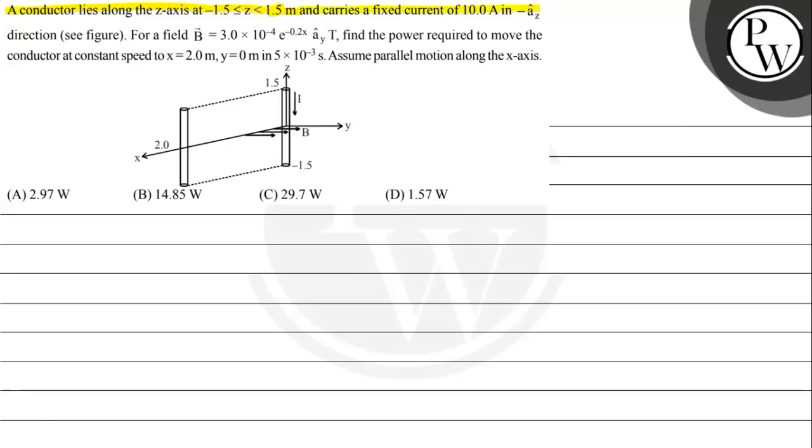of 10 ampere in minus az cap direction as shown in the figure. For a field B = 3×10^-4 e^(-0.2x) ay cap Tesla, we need to find the power required to move the conductor at a constant speed to x = 2 meter, y = 0 meter in 5×10^-3 second. Assume parallel motion along the x-axis.